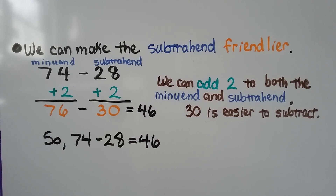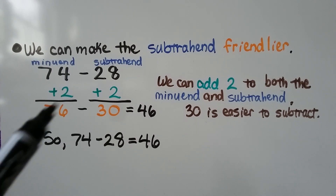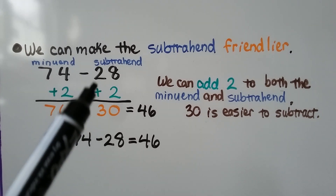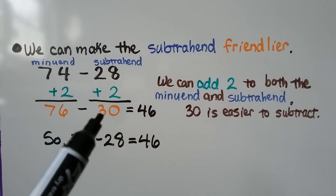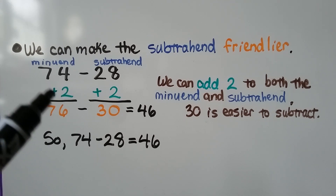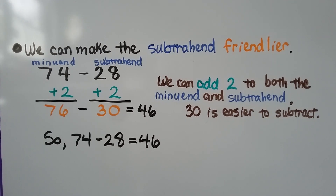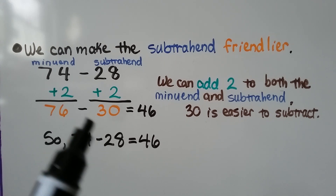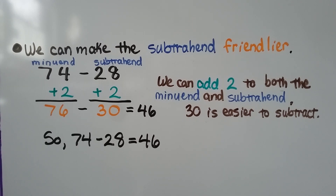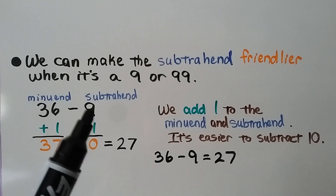We can use the strategy of making the subtrahend friendlier for mental math. For example, with 74 minus 28, we add 2 to the subtrahend to make it 30, and because it's subtraction we also add 2 to the minuend to get 76. Then 76 minus 30 is equal to 46. Thirty is easier to subtract than 28.